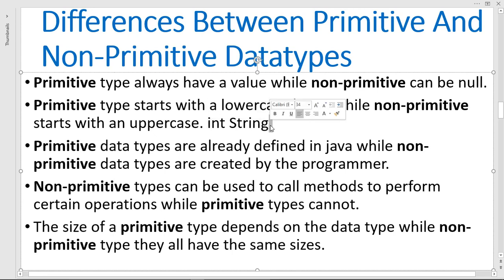For classes, as discussed in our syntax chapter, a class name should start with uppercase. Another difference is that primitive data types are already defined in Java with their values and sizes already assigned, while non-primitive data types are created by the programmer. You create them according to your own specification.